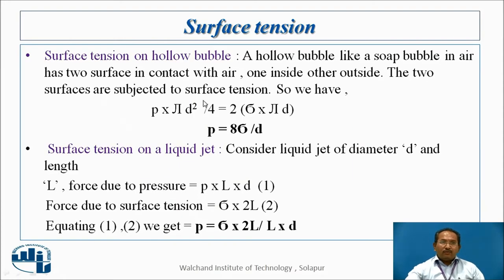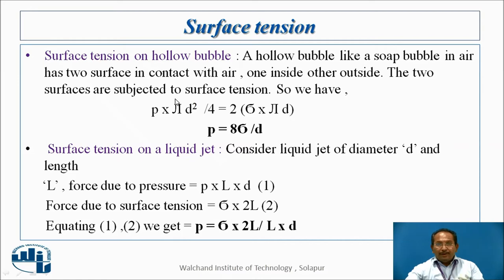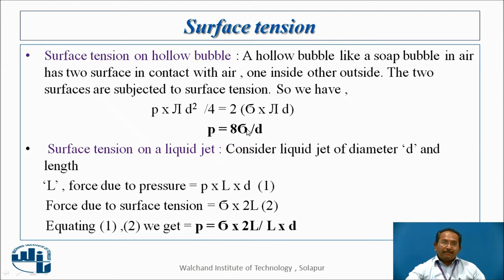Now, the second part: for a hollow bubble. A hollow bubble, like a soap bubble in air, has two surfaces. The two surfaces are subjected to surface tension, so the tensile force is 2 × sigma × π D. Equating with the pressure force, you will get P = 8σ / D.